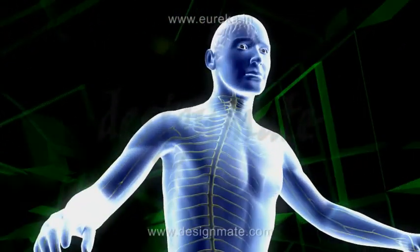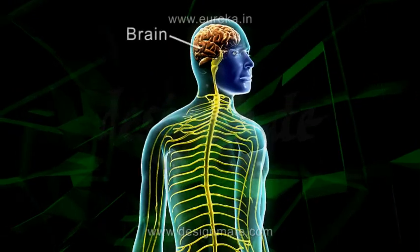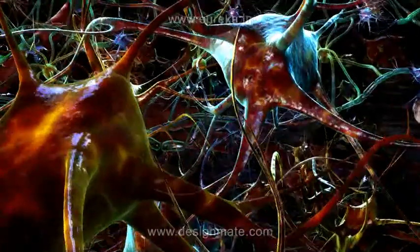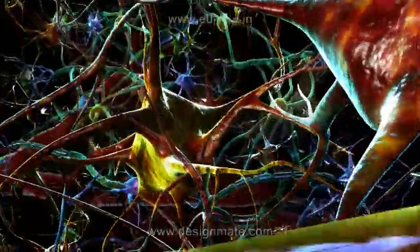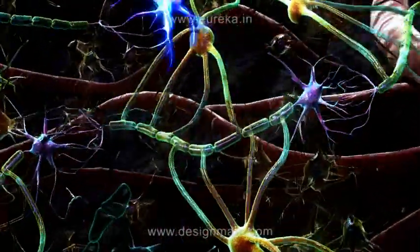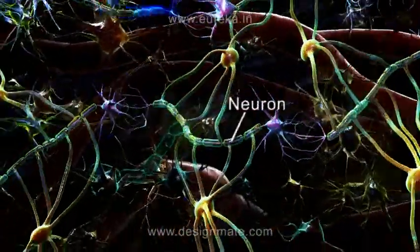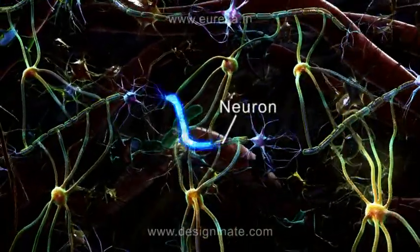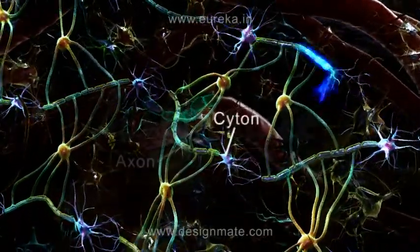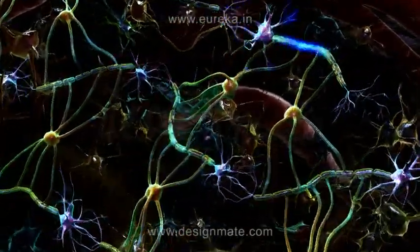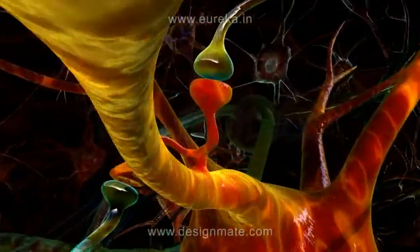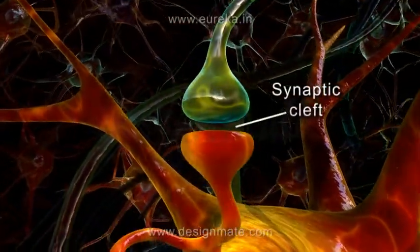One of the most vital organs of the human body is the brain. A look inside the brain shows a fascinating network of neurons where the impulse travels in the form of action potential. We can clearly observe that the impulse travels along the neuron in one direction, always from the cyton to the axon. A closer look at the junction between neurons shows that there is a gap known as the synaptic cleft.